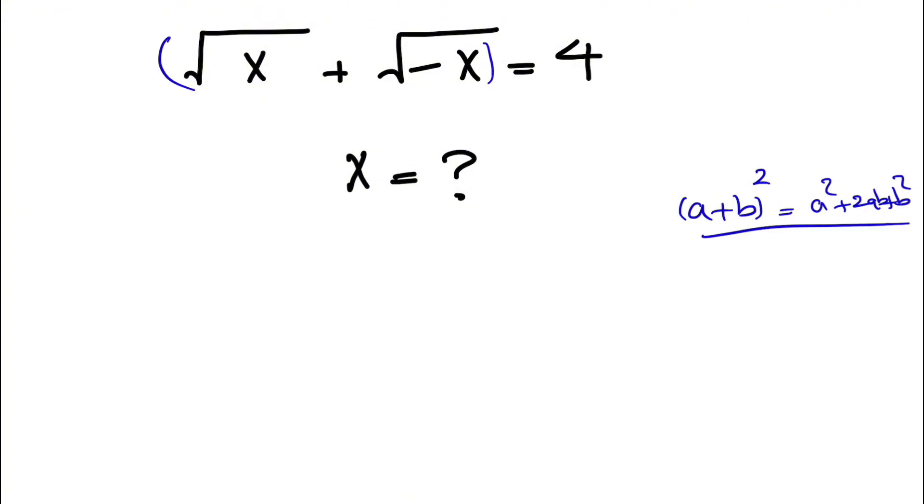So we're going to use that here. We're going to square both sides. From the first term we'll have x plus 2 times the square root of x times the square root of minus x, plus minus x, which equals 4 squared, which is 16.